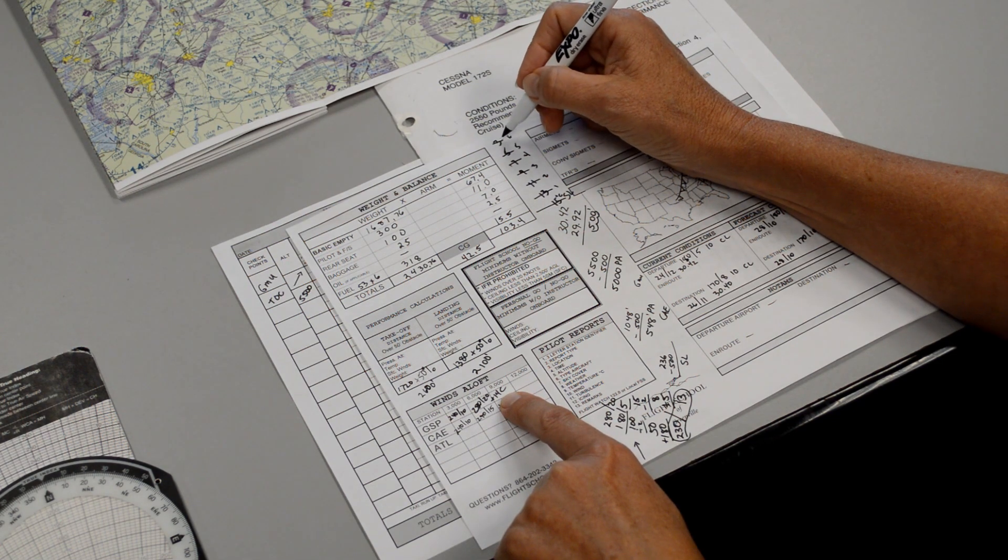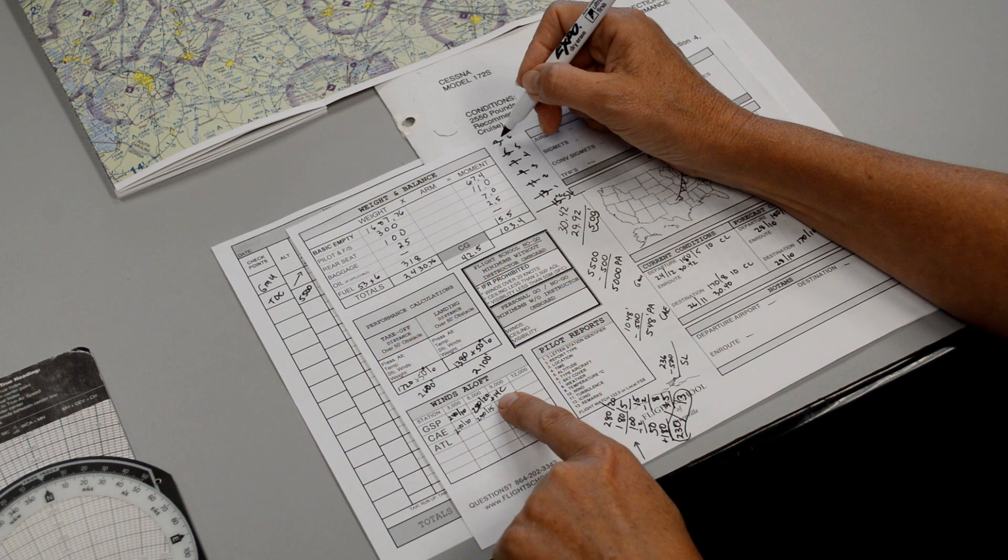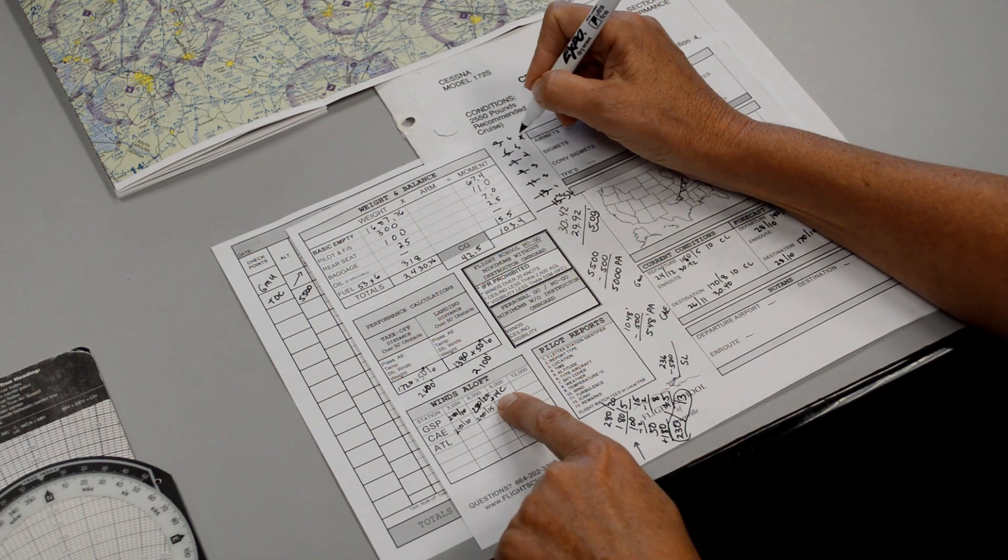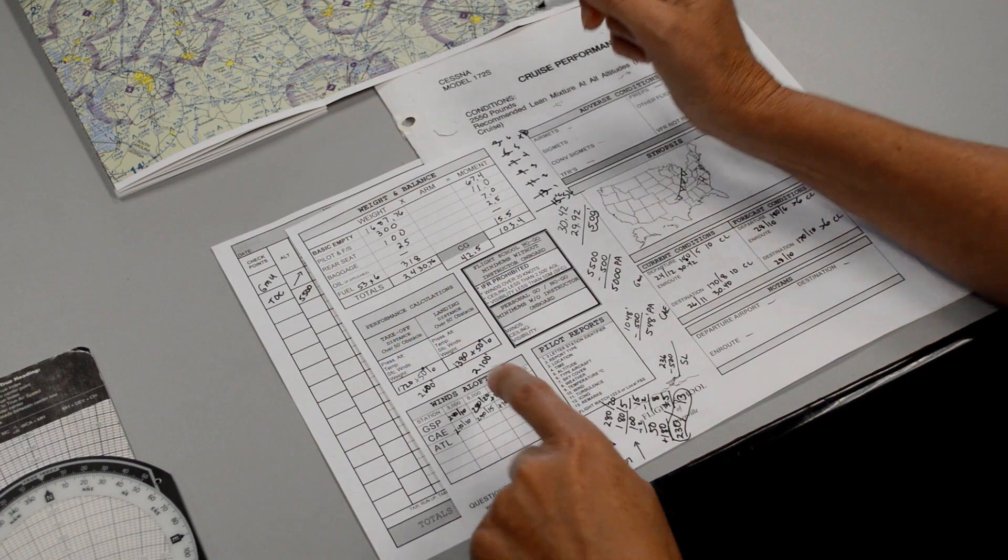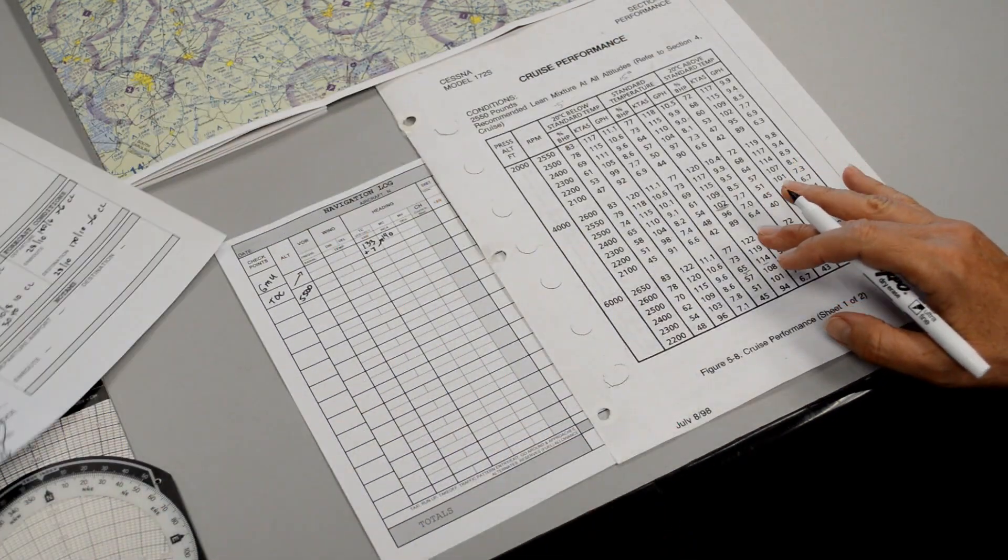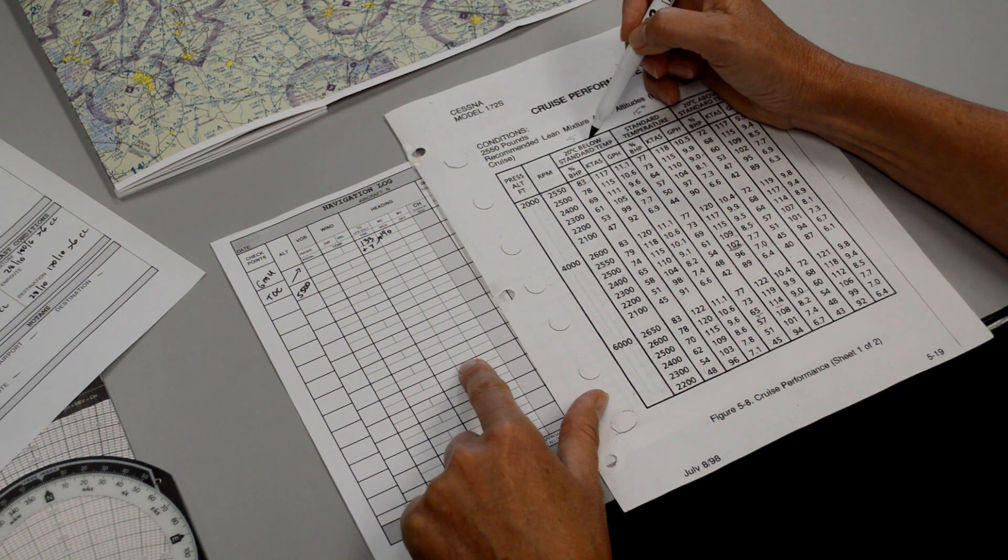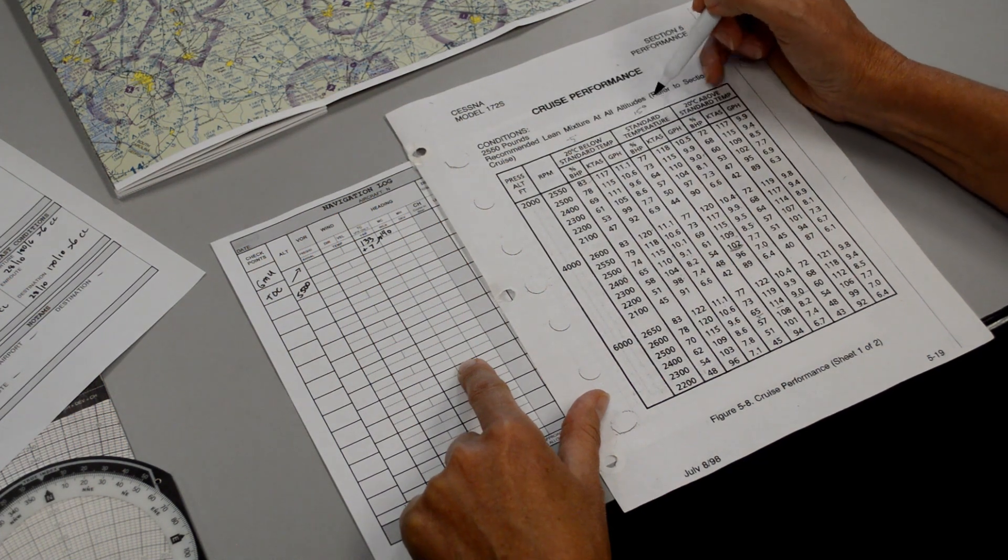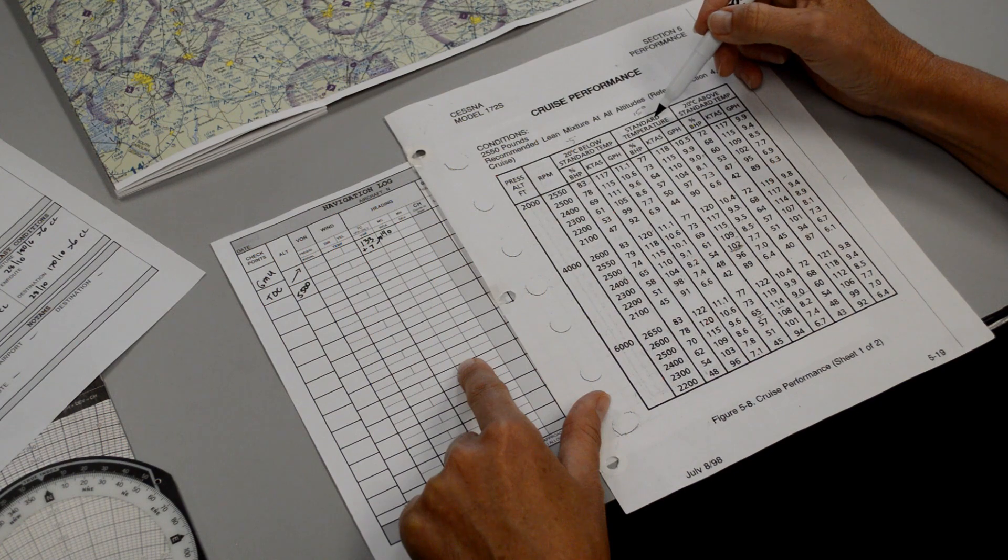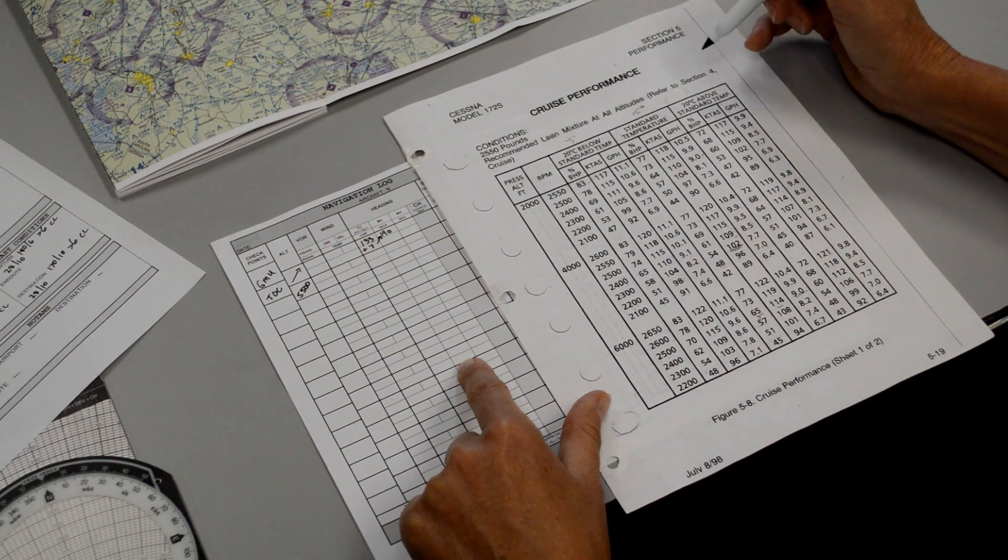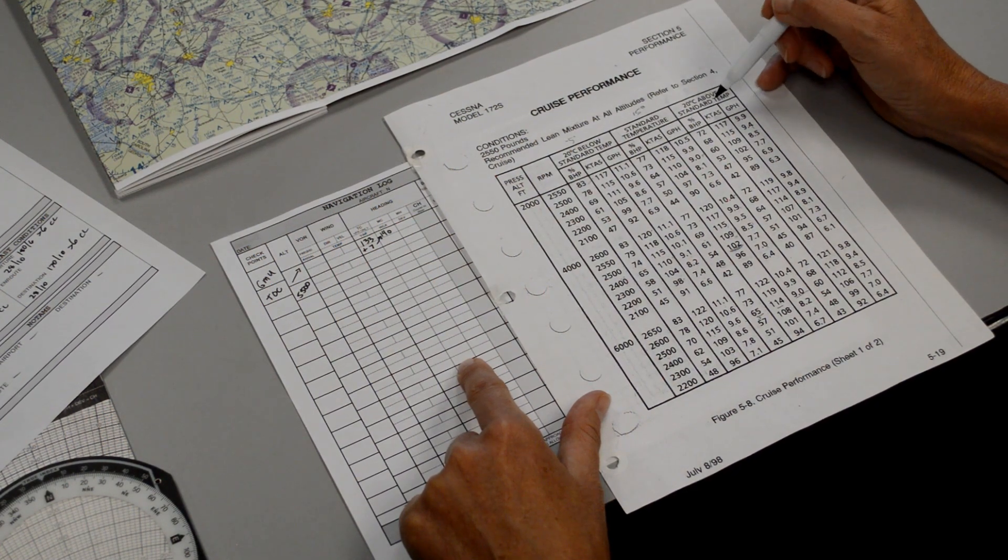So we are basically plus 10 degrees above standard. Standard at 6,000 feet should be 3 degrees, but today it's around 14 degrees. We are plus 10 above standard. When we look at our chart, the first column says 20 below standard, standard, and 20 above standard. So really we would need to interpolate between the standard column and the above standard column.